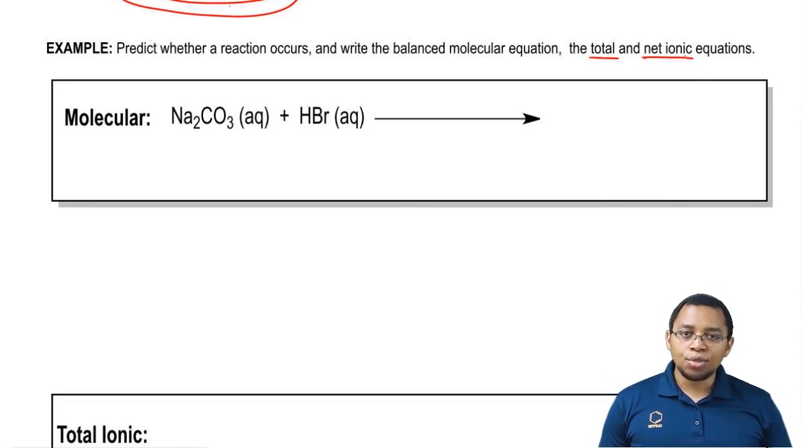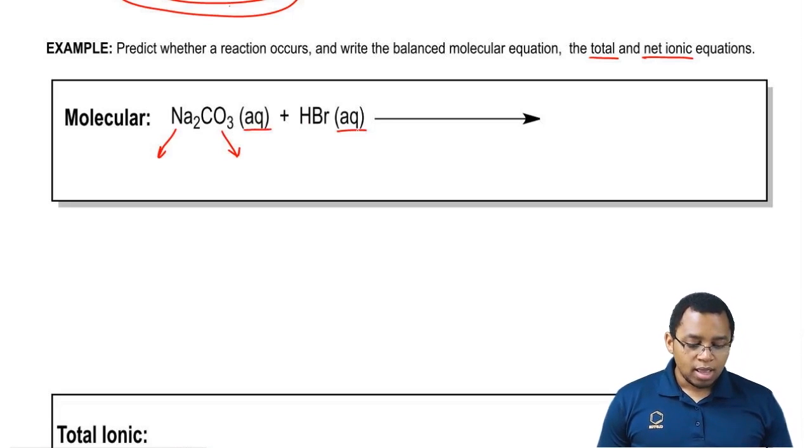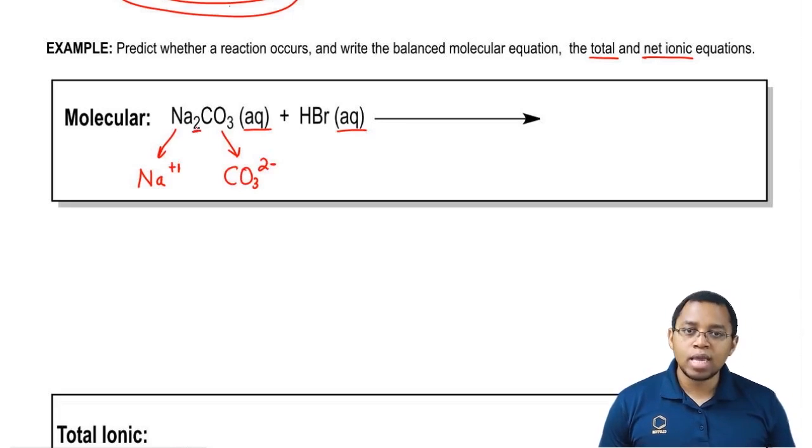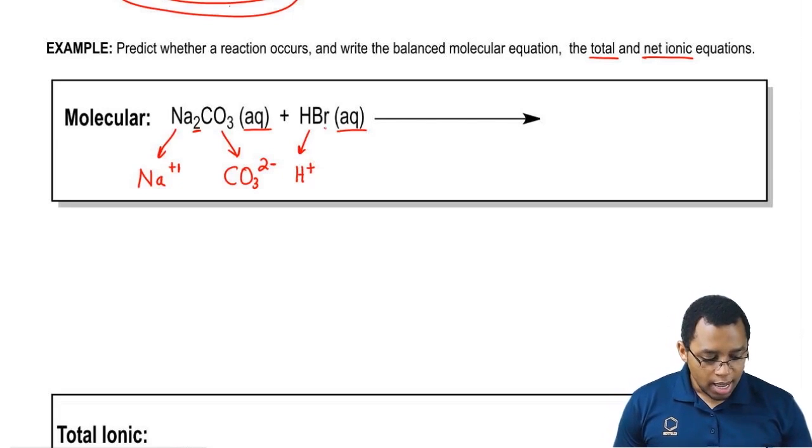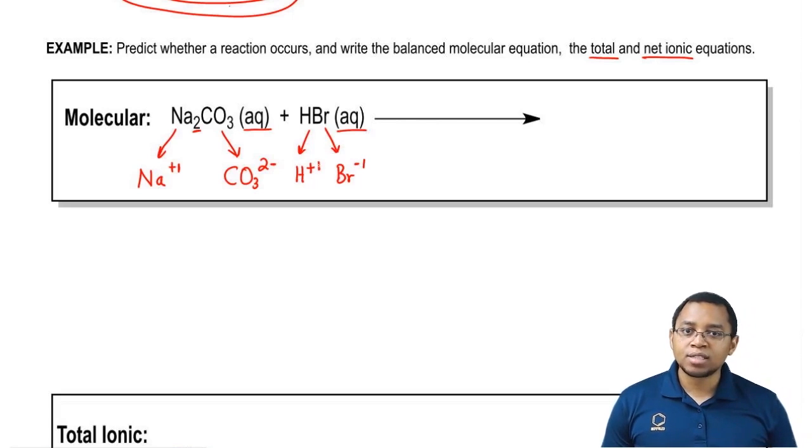We're going to take the same approach we learned earlier. Here we have Na2CO3 plus HBr. We're going to break this up into its ions because they're both aqueous. Na is going to break off, and Na is in group 1A so it's plus 1. CO3 is a polyatomic ion, it's carbonate. Carbonate is CO3 2 minus. That's where this little 2 came from, it came from the carbonate. HBr breaks up into H plus, because hydrogen is in group 1A so it's plus 1. And then bromine breaks off into Br minus 1, which is minus 1 because it's in group 7A.